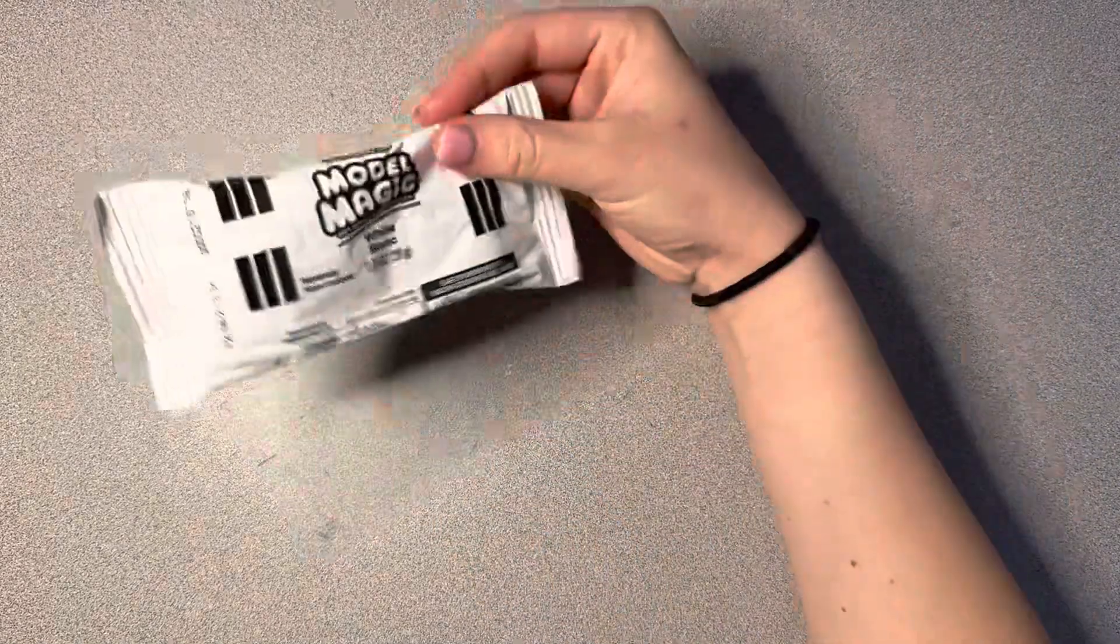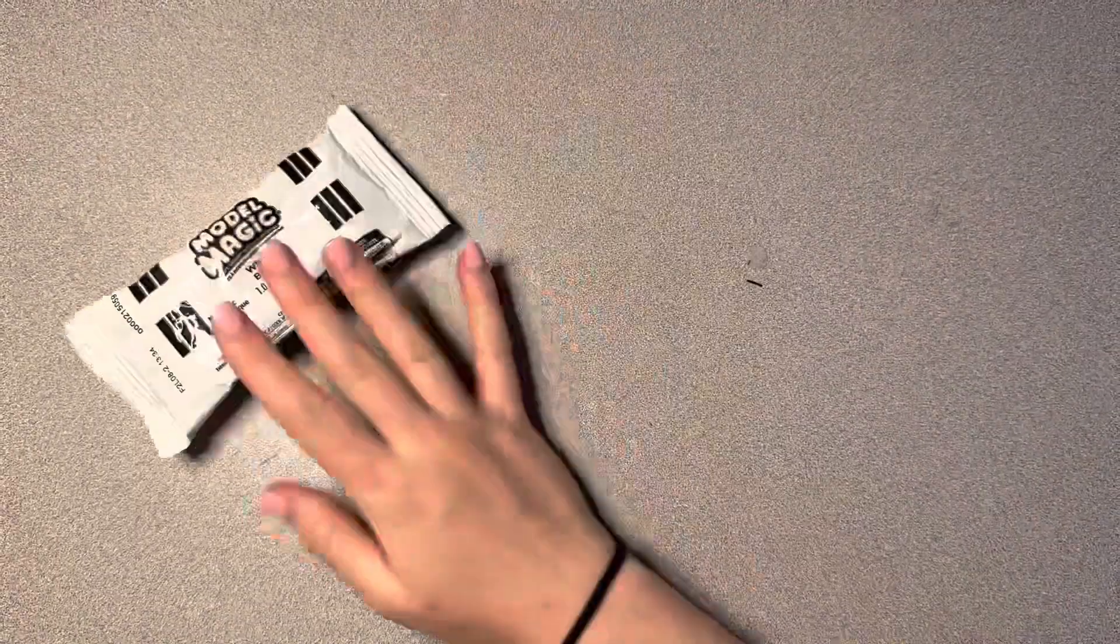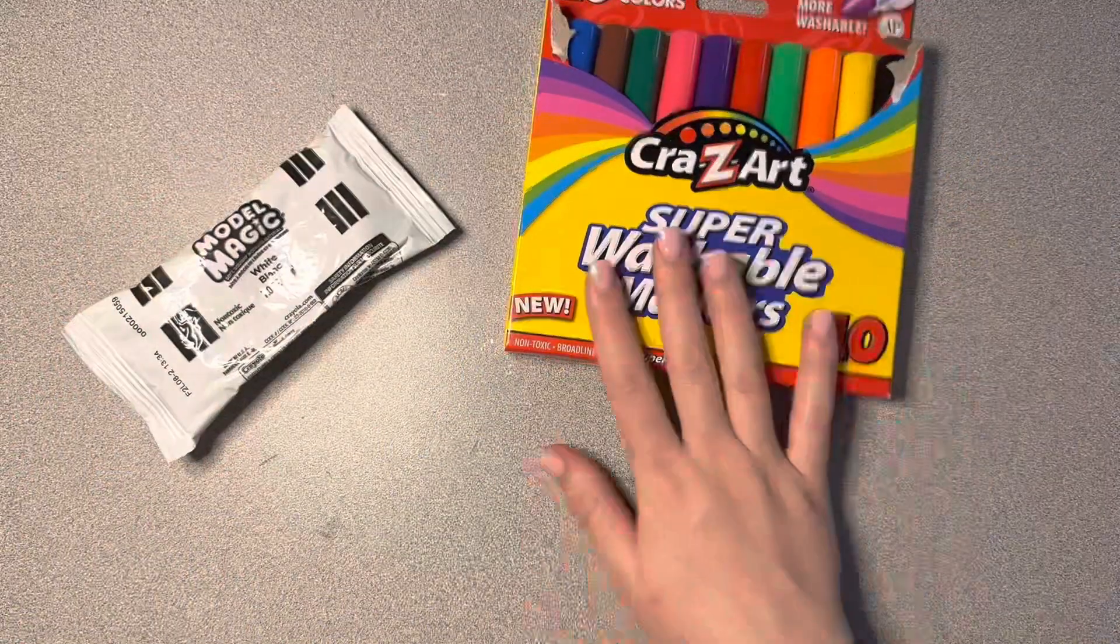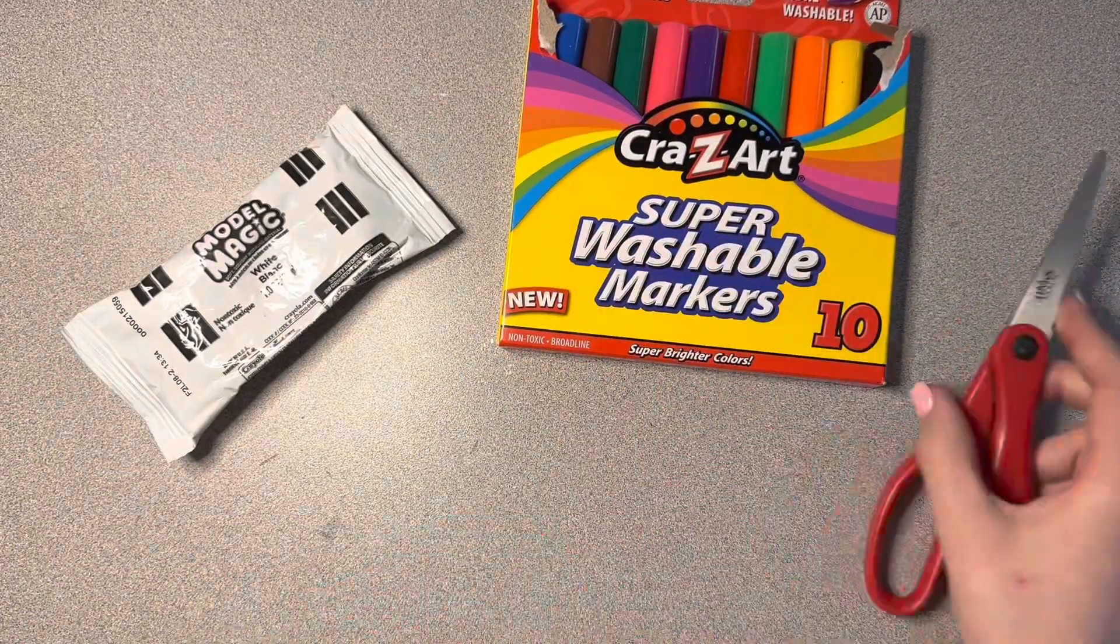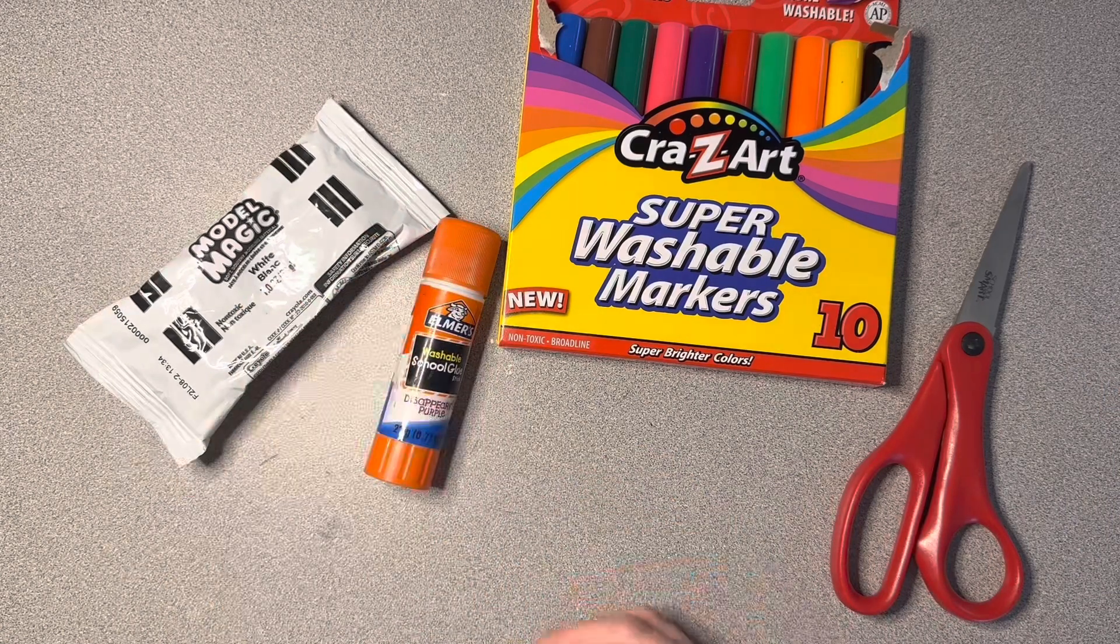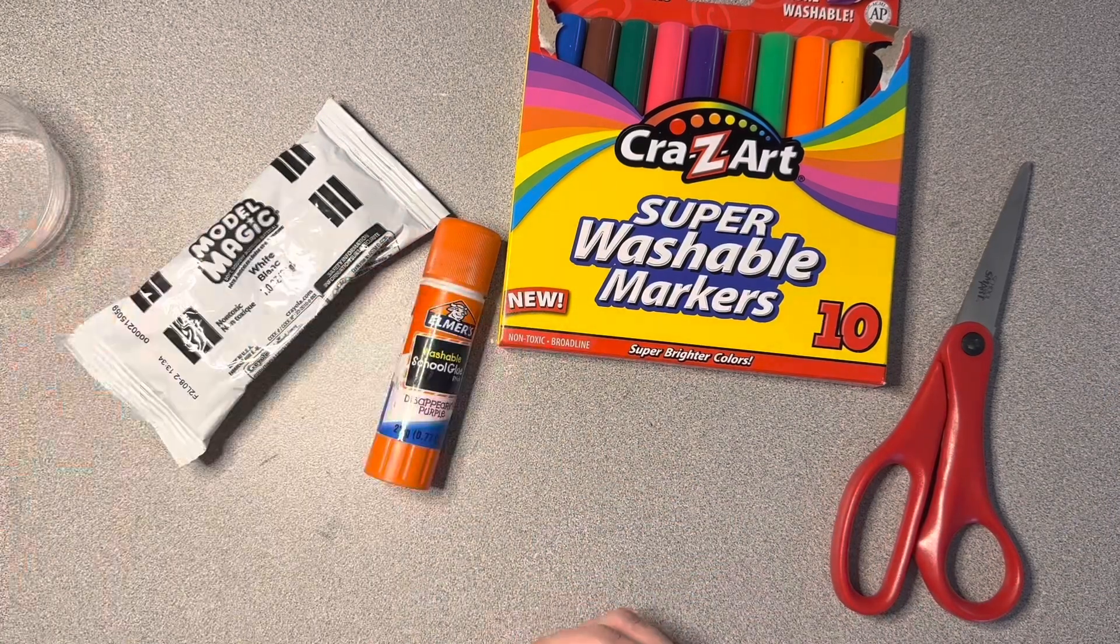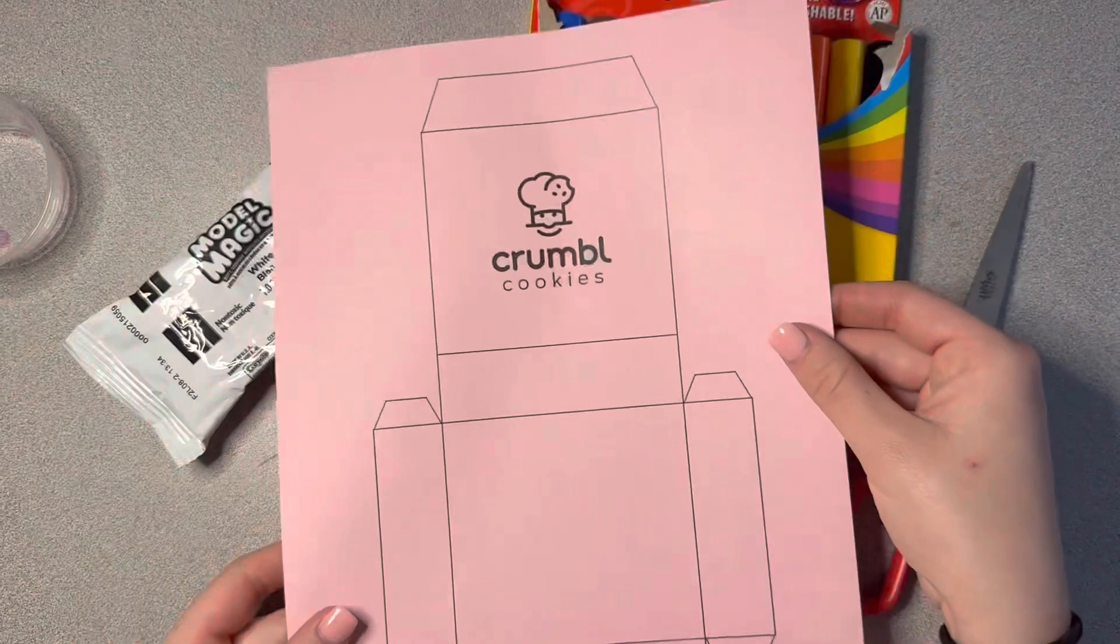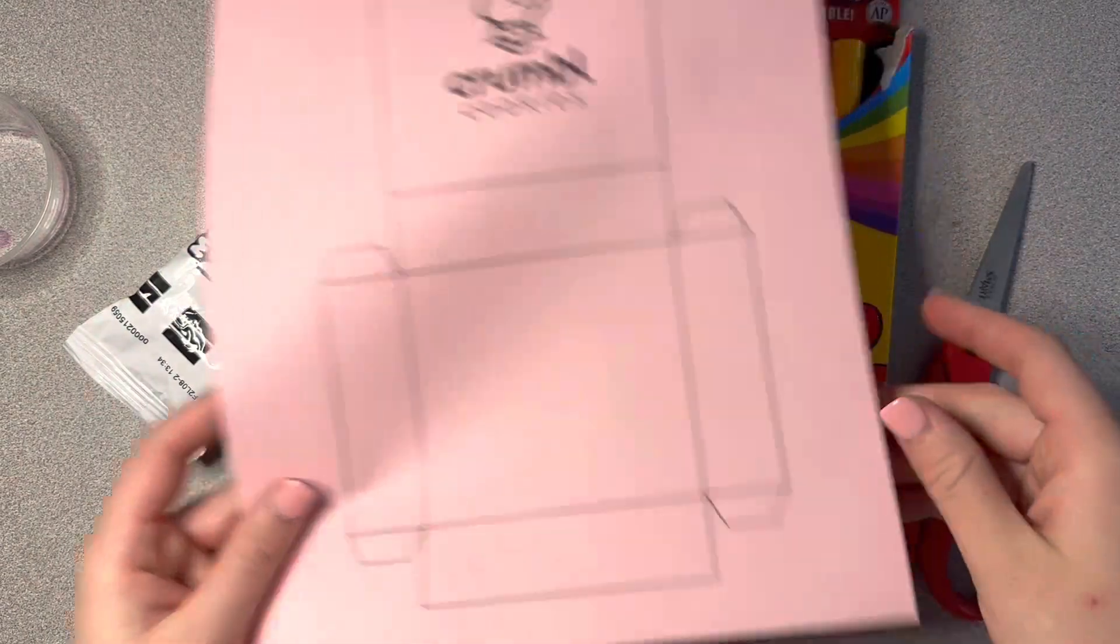So what you're going to need is some white model magic, markers at your table, scissors, a glue stick, a cup, and you'll also have one of these to help you cut out and make your own box.